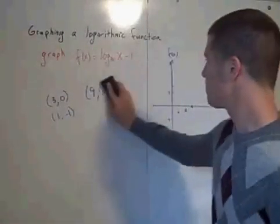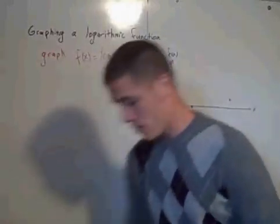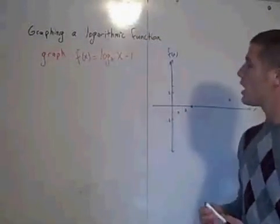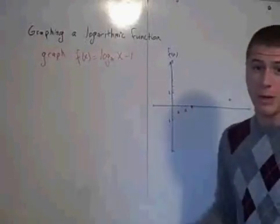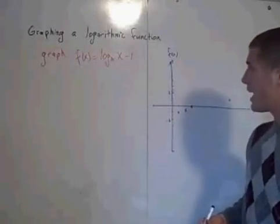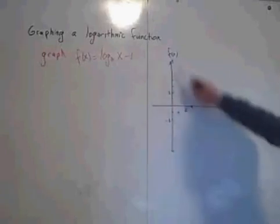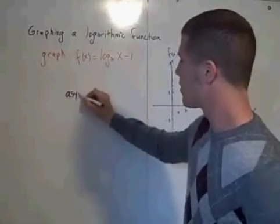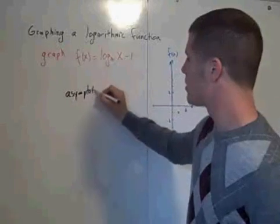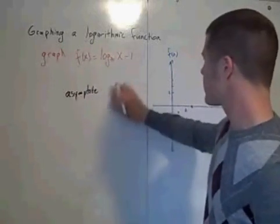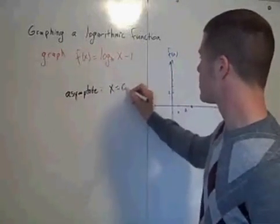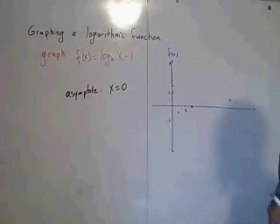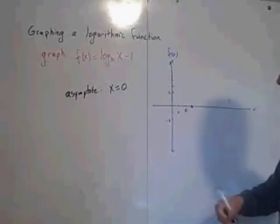So where is the asymptote? Well, there's no horizontal shift here. Or at least the horizontal shift is 0. So the asymptote is going to be the y-axis. So the asymptote is the line x equals 0. So x equals 0 is the vertical line that the graph of this always approaches but never touches.